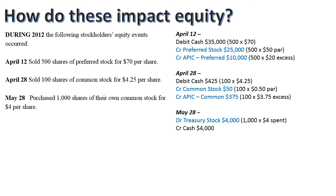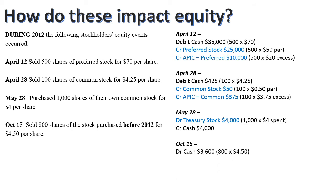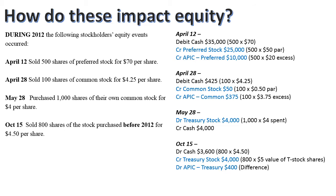Treasury stock is a contra equity account, so it's increasing. On October 15th, our last transaction involving equity, we sell 800 shares of the stock purchased before 2012 for $4.50 a share. We get $3,600 in cash. Treasury stock decreases by $4,000 because it's 800 shares times the $5 value of those pre-2012 shares. The difference goes to APIC for Treasury. Debits must equal credits — that rule never changes.